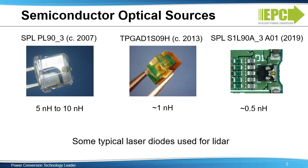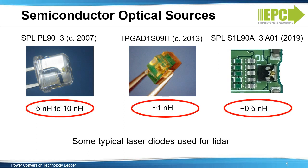A key laser driver parameter is the inductance of the laser diode and its package. This inductance limits the ability to achieve the necessary short and narrow pulses. Silicon MOSFETs are slow, and this was one factor among many, but with the advent of eGaN, inductance has become a dominant factor. Laser manufacturers have responded by improving package design and reducing inductance dramatically.